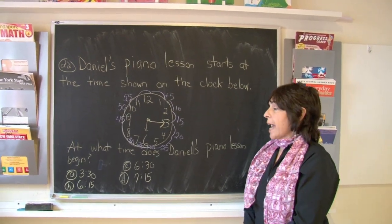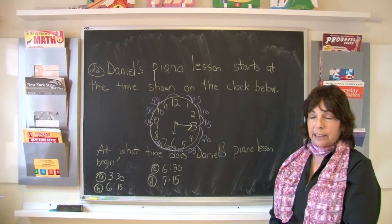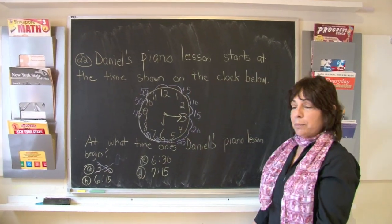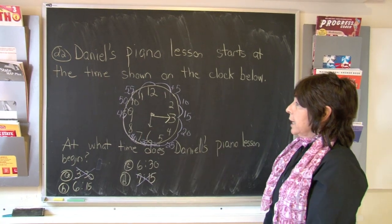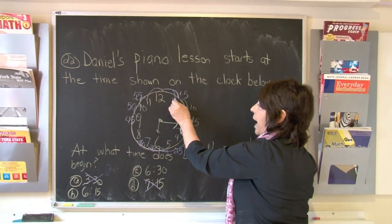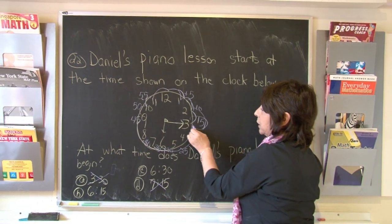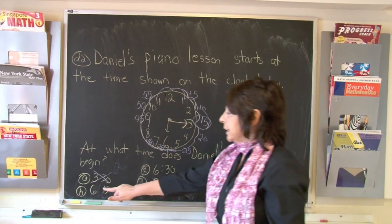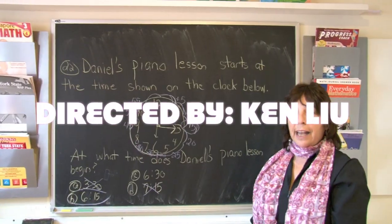So now that we know that, we look where is the hour hand. It is at six. So it cannot be three thirty, nor can it be seven fifteen. Now let's look at our minutes. As we count, five, ten, fifteen. Here we are at the three, so it is fifteen. So the correct answer is six fifteen. B was your correct answer.